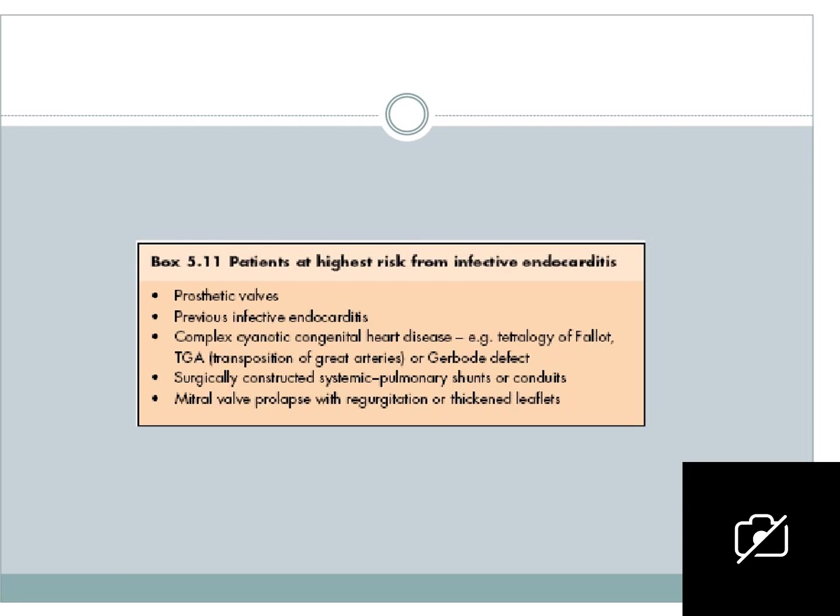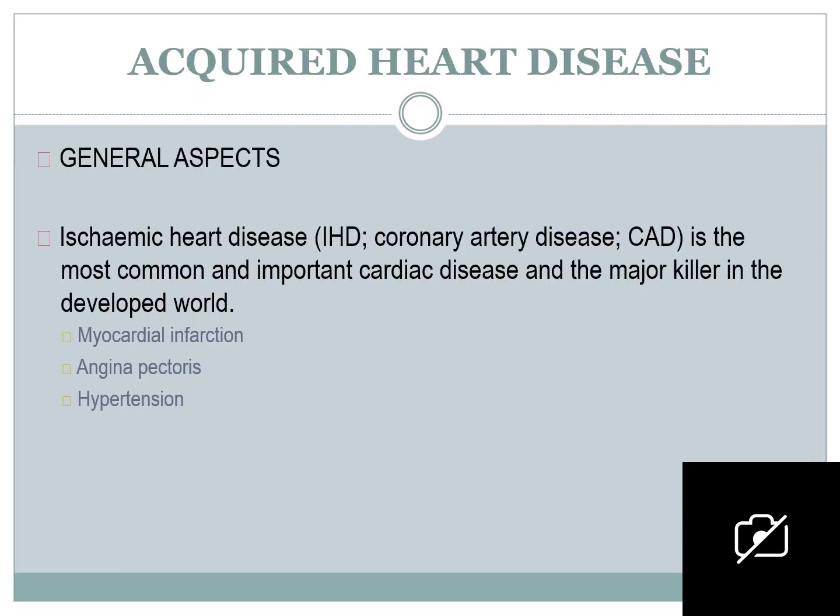Patients at higher risk from infective endocarditis include those with prosthetic valves, previous infective endocarditis, complex cyanotic congenital heart disease (e.g., tetralogy of Fallot), surgically constructed systemic-pulmonary shunts or conduits, and mitral valve prolapse with regurgitation or thickened leaflets. This is why you must always ask patients about any heart problems, medical history, previous surgeries, or medications.